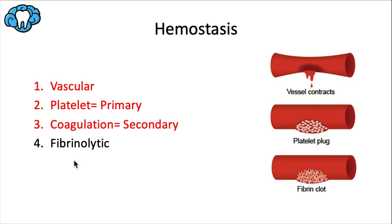Finally, we have the fibrinolytic phase. It involves plasmin, an enzyme in blood that cuts the fibrin mesh and dissolves the clot after it's done its job. So primary hemostasis is all about platelets, secondary hemostasis is all about coagulation — note that these are two entirely different things. Hemostasis as a whole relies on the proper function of blood vessels, platelets, and coagulation factors, all of which we'll talk more about.